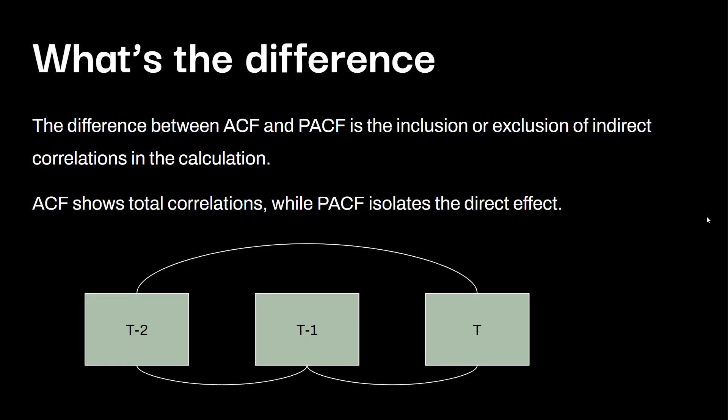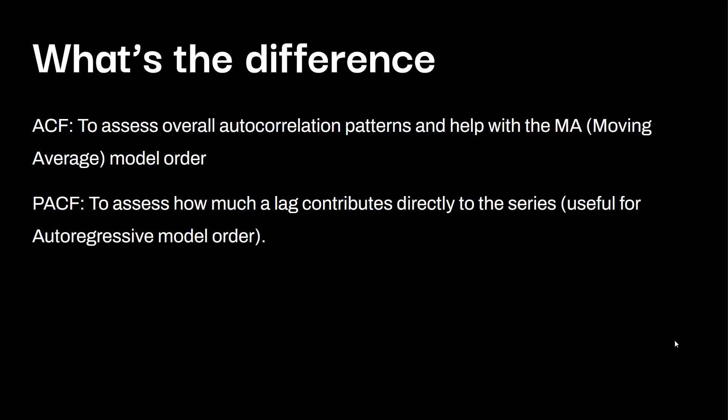So what's the difference? The difference between ACF and PACF is the inclusion or exclusion of indirect correlations in the calculation. ACF shows the total correlations while PACF isolates the direct effect. ACF to assess the overall autocorrelation patterns and help with the moving average model order. PACF to assess how much lag contributes directly to the series, useful for autoregressive model order.